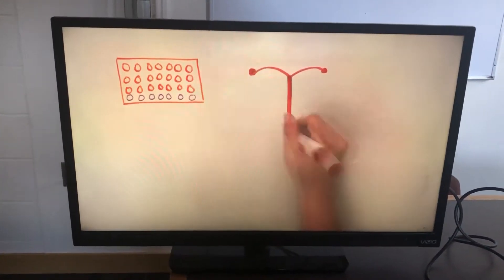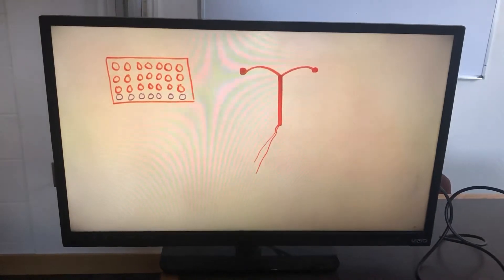Internal contraceptives, like an IUD, are one of the most effective ways to prevent pregnancy for women.